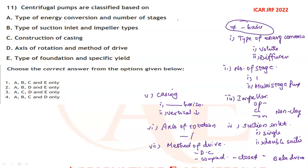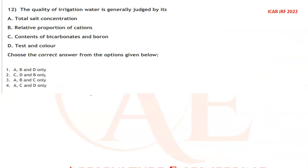In the question, type of energy conversion, number of stages, type of suction inlet, impeller types, construction of casing, axis of rotation, and method of drive are all correct statements. Except option E, all others are correct — A, B, C, D — so option four is the correct answer.